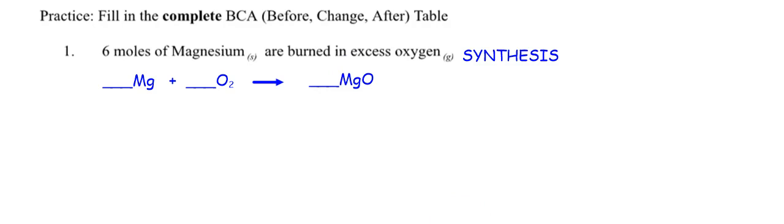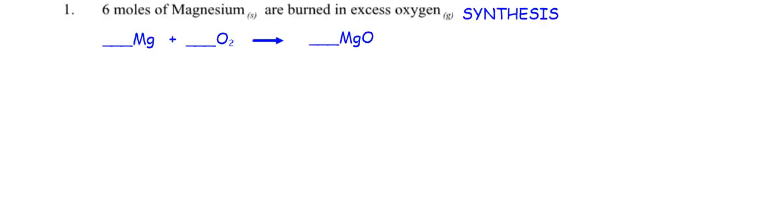What do you have to do next? What's the charge of magnesium? Plus two. What's the charge of oxygen? Negative two. Do you have to crisscross? No. So the formula for magnesium oxide is MgO. Now I have to balance it. I have one magnesium on the left, one magnesium on the right, two oxygens on the left, one oxygen on the right. Put a two in front of Mg and a two in front of MgO. Now I'm ready to do stoichiometry.